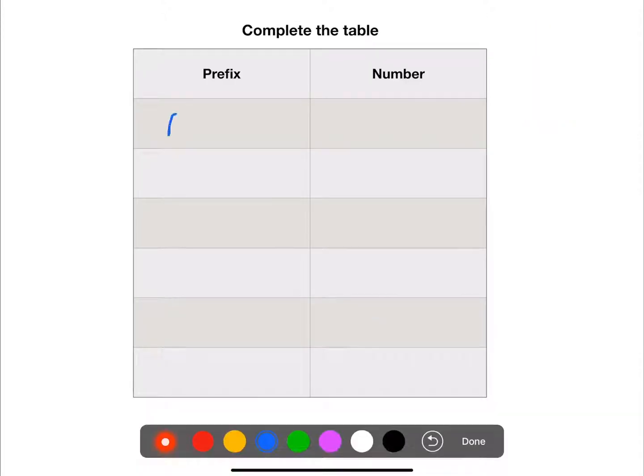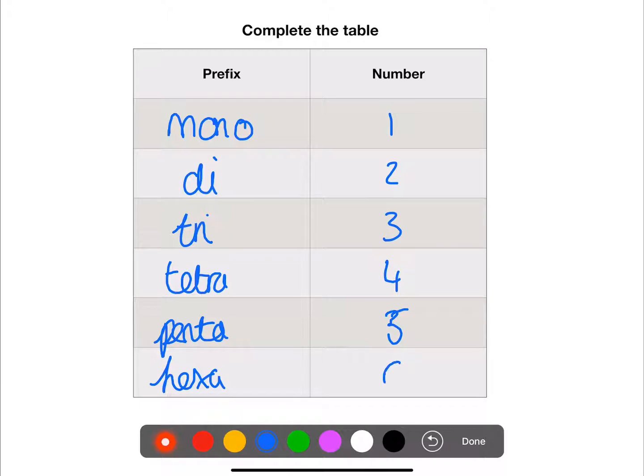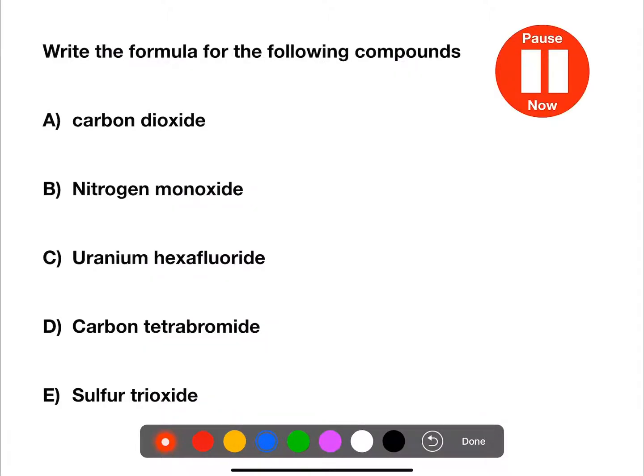So the prefixes that we have are mono, di, tri, tetra, penta, hexa, and they are for numbers of atoms one, two, three, four, five, and six. So try using that table to allow you to write the formula for the following compounds. Pause the video now.